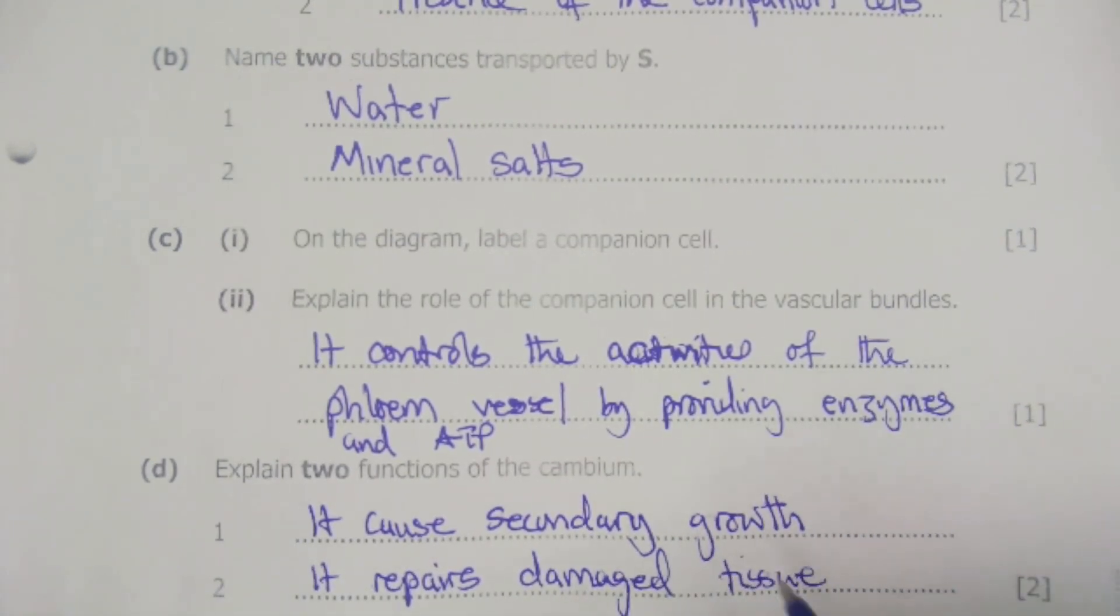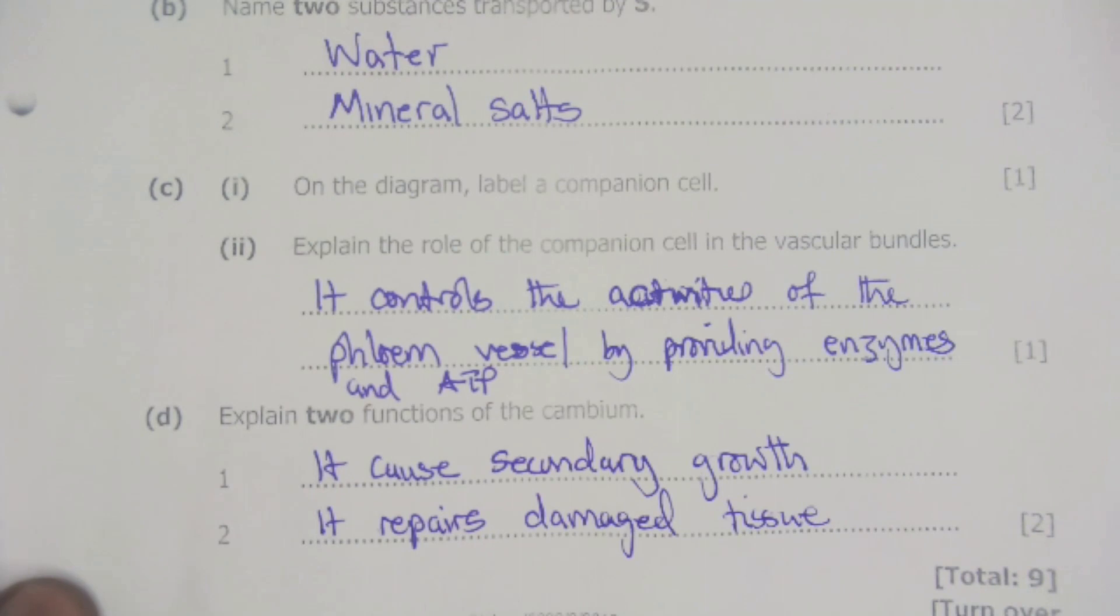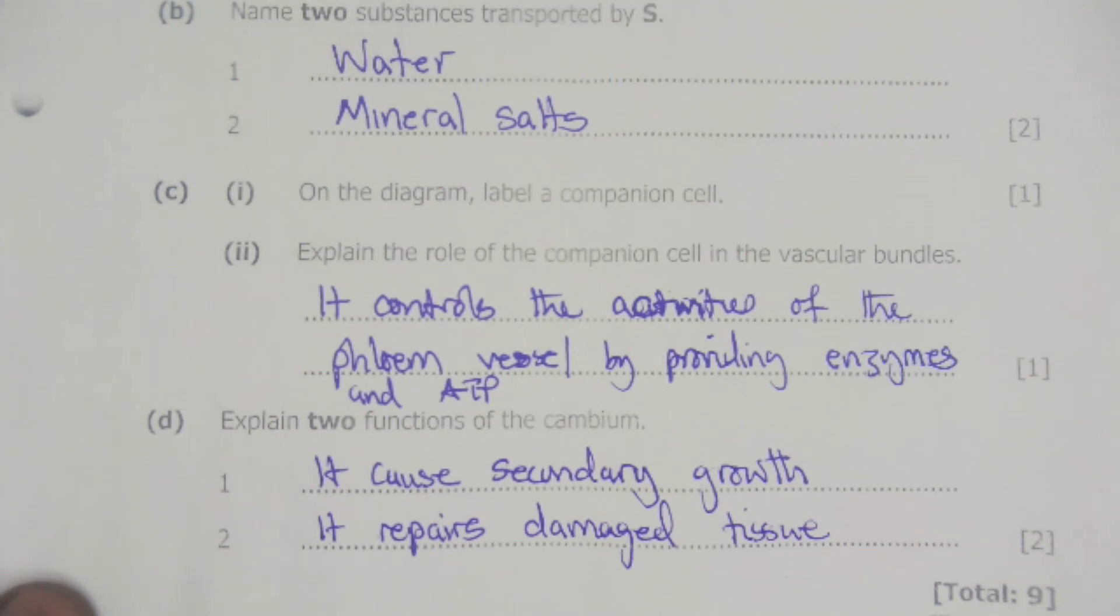Then the other function is that it repairs damaged tissues. When a plant has received a physical injury, it will actually be repaired by the cambium. The cambium will produce a mass of cells, which is known as a callus, which will then form different parts of cells which are needed. It also causes secondary growth by forming new phloem and new xylem, which makes the stem now increase in its girth.